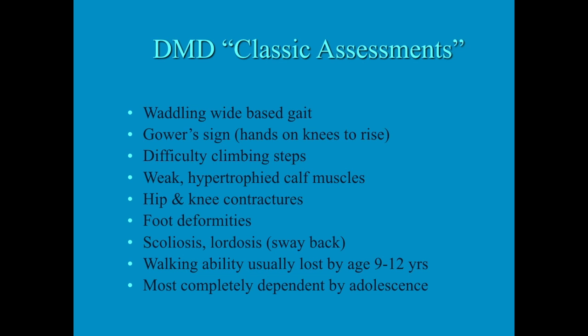They have weak but hypertrophied calf muscles. They develop contractures of their knees and hips because those joints are not being utilized adequately. Their feet become deformed from lack of use and they develop scoliosis, as well as possibly a lordosis. This process begins at age three and gets progressively worse — they end up in a wheelchair and develop scoliosis due to lack of muscle support along the spine.